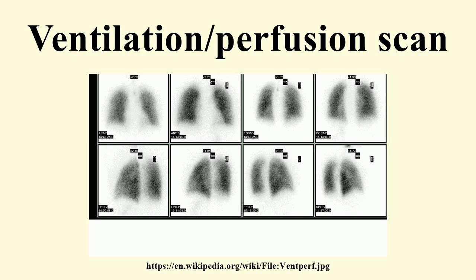A ventilation perfusion lung scan, also called a VQ lung scan, is a type of medical imaging using scintigraphy and medical isotopes to evaluate the circulation of air and blood within a patient's lungs, in order to determine the ventilation perfusion ratio. The ventilation part of the test looks at the ability of air to reach all parts of the lungs, while the perfusion part evaluates how well blood circulates within the lungs.